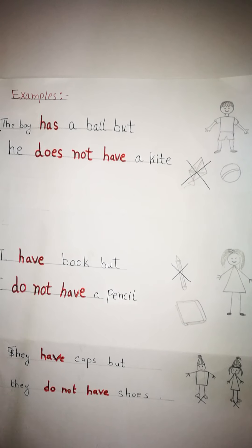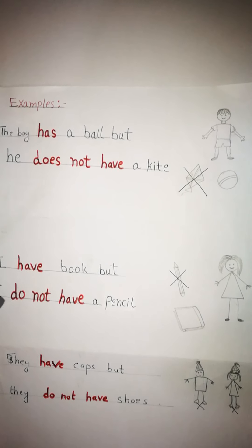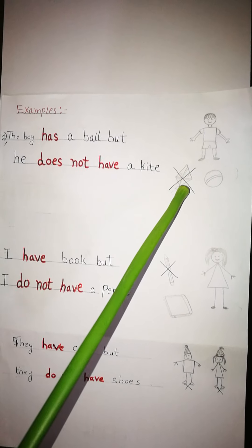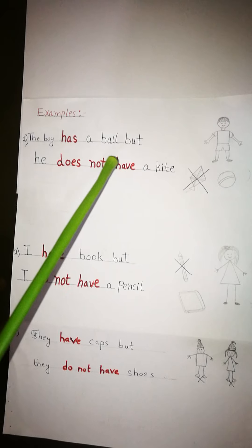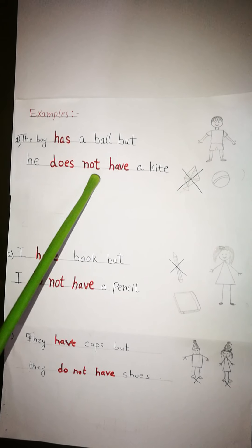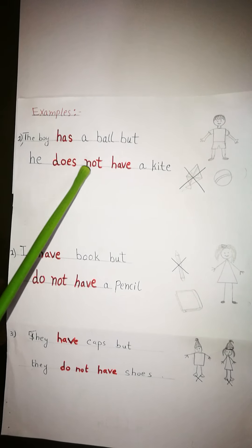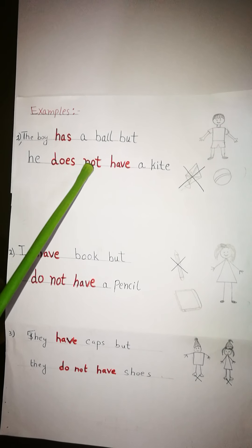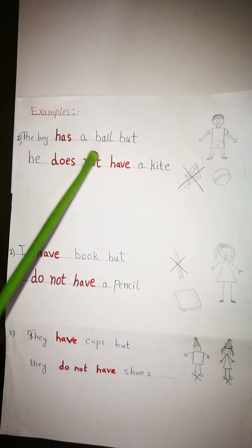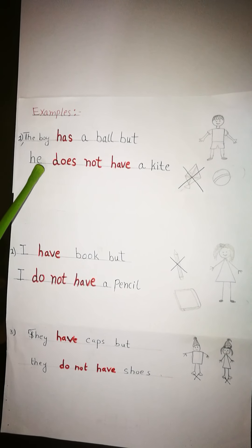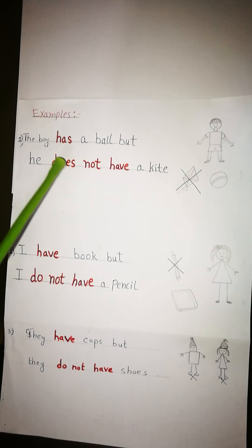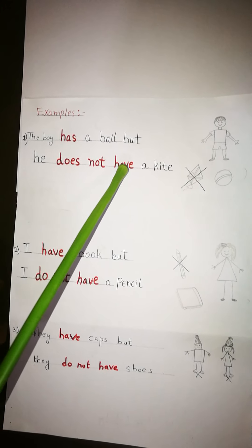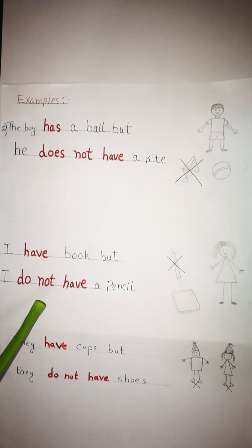In this lesson I am telling you the use of 'does not have' and 'do not have'. When a boy, or when someone does not have something, we use 'does not have'. The 'has' changes into 'have' for the negative. The boy has a ball but he does not have a kite. For the negative we use 'does not have' — 'has' changes into 'have'. Normally with 'he' and 'she' we use 'has', but when we make it negative we use 'does not have'.